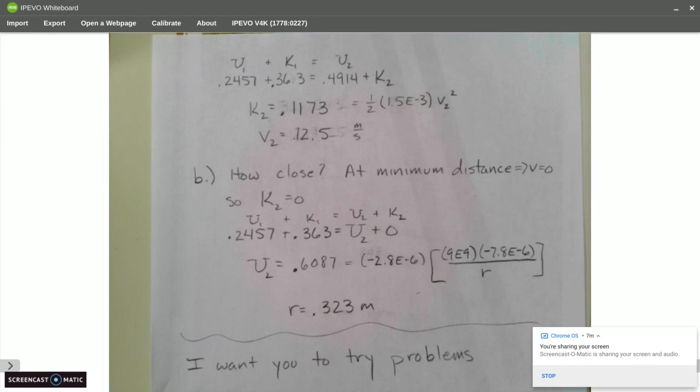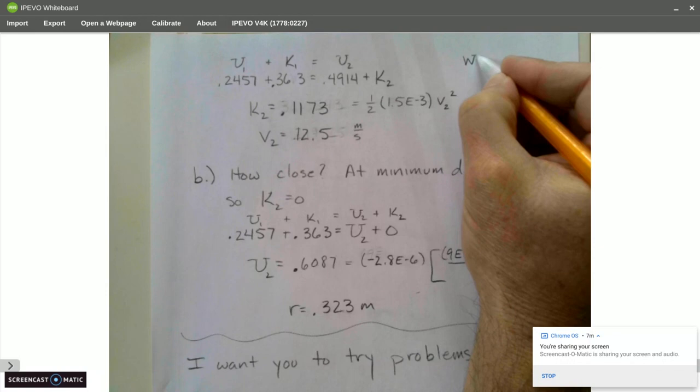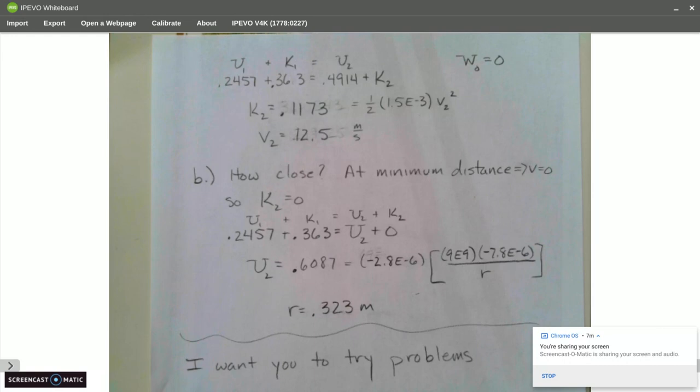Going here, I'm going to now use U1 plus K1 is equal to U2 plus K2 with W0 equals zero. So I'll put that over here. I have 0.2457 plus 0.363 is equal to 0.4914 plus kinetic energy two. Notice the potential energy went up, which means the kinetic energy is going to go down. So I get K2 is 0.1173 joules. Set that equal to one half MV squared. And I get the velocity is 12.5. So it has gone from 22 meters per second to 12.5.